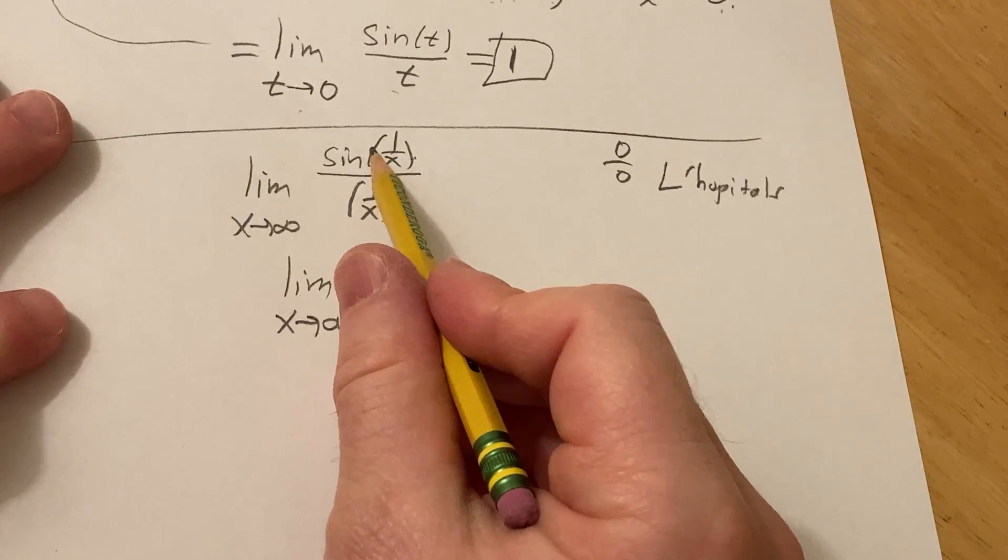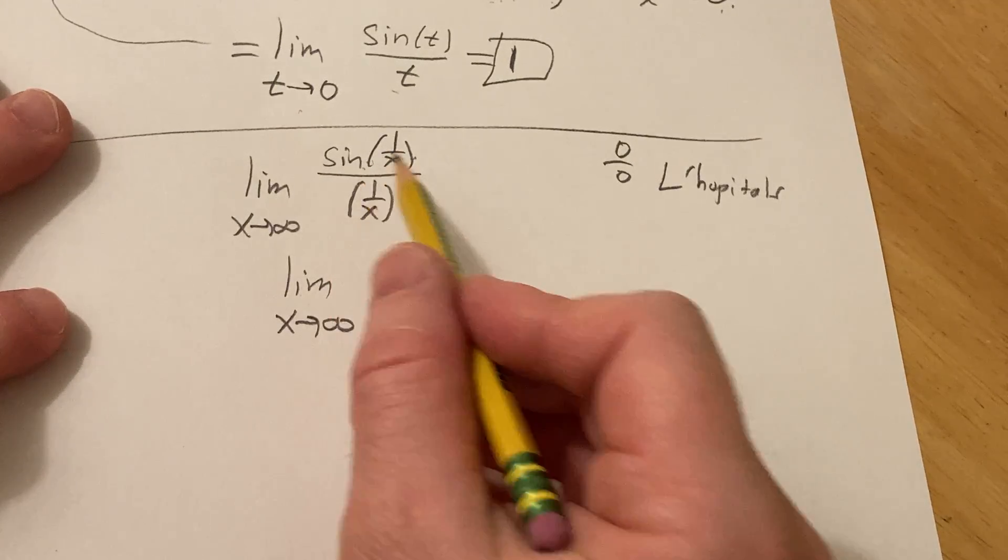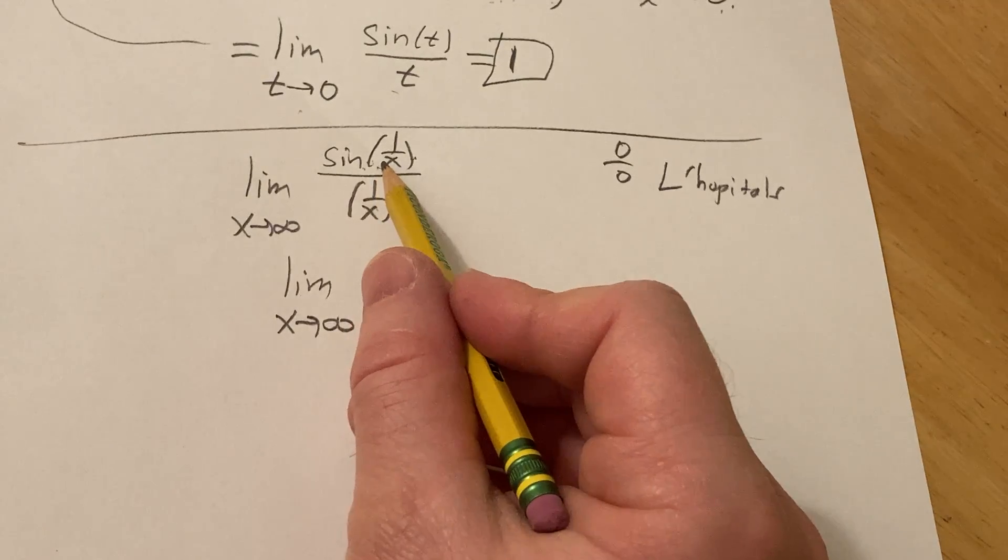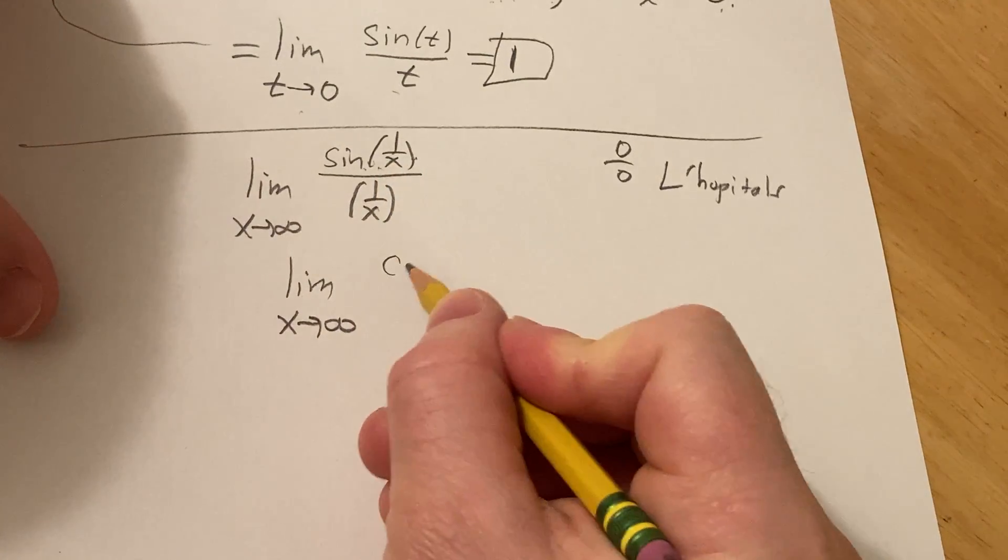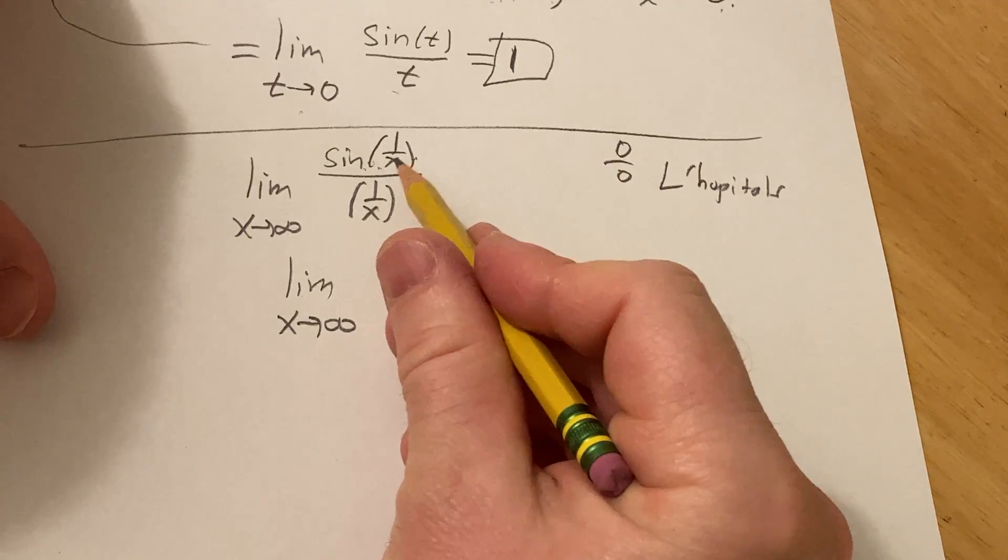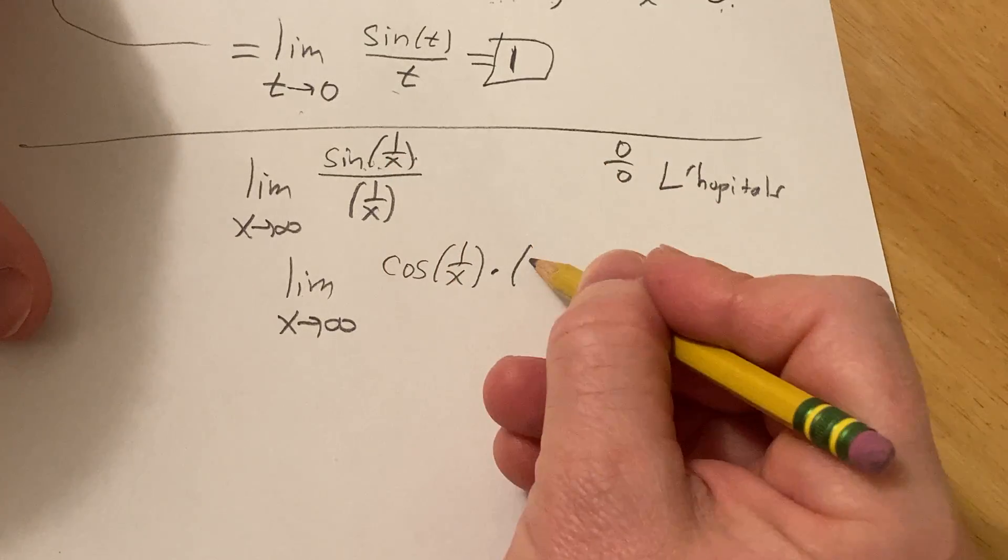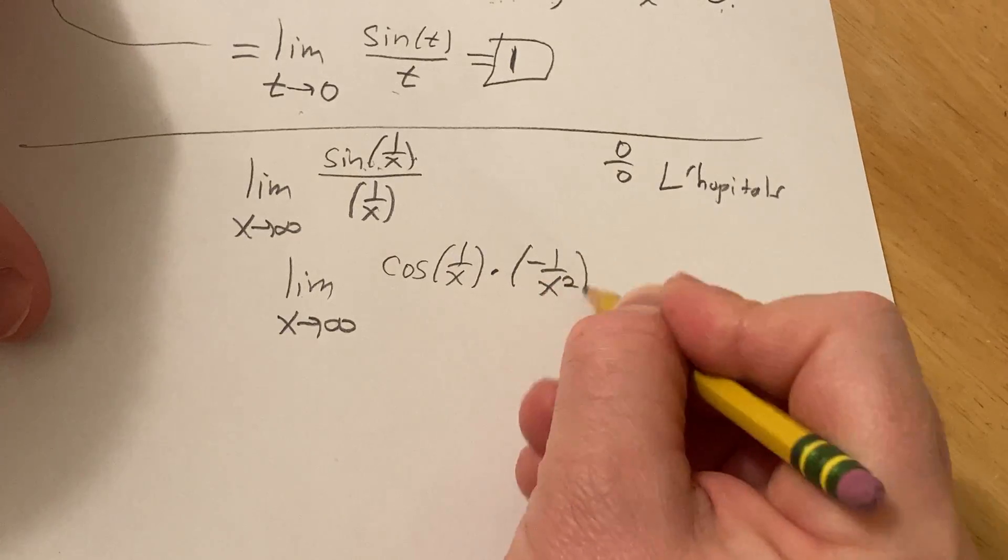So if you do that here, you take the derivative of the top and the derivative of the bottom. So the derivative of sine is cosine. But there's an inside function here, so it'll be cosine of 1 over x times the derivative of the inside function. The inside function is 1 over x and its derivative is negative 1 over x squared.